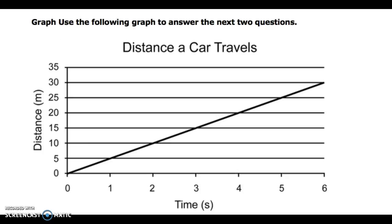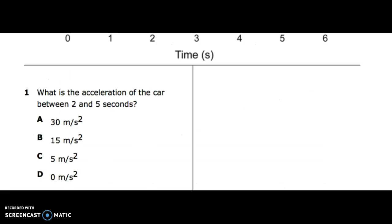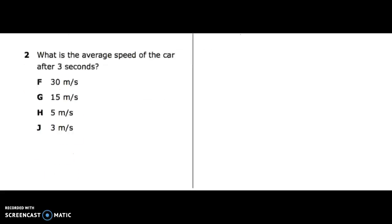The title of the graph is 'Distance a Car Travels.' You have distance and time. Number one: what is the acceleration of the car between two and five seconds? Number two: what is the average speed of the car after three seconds?